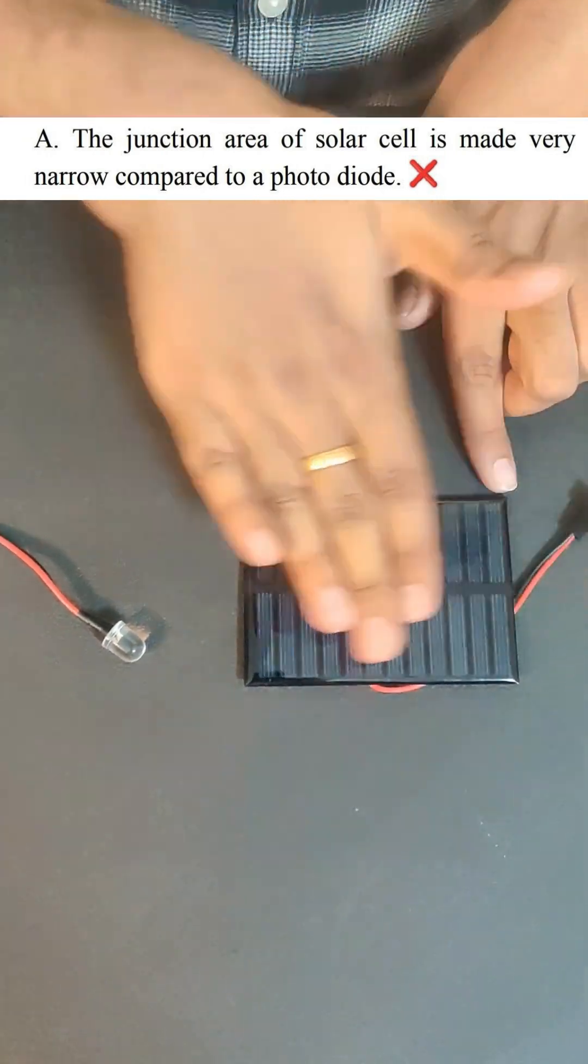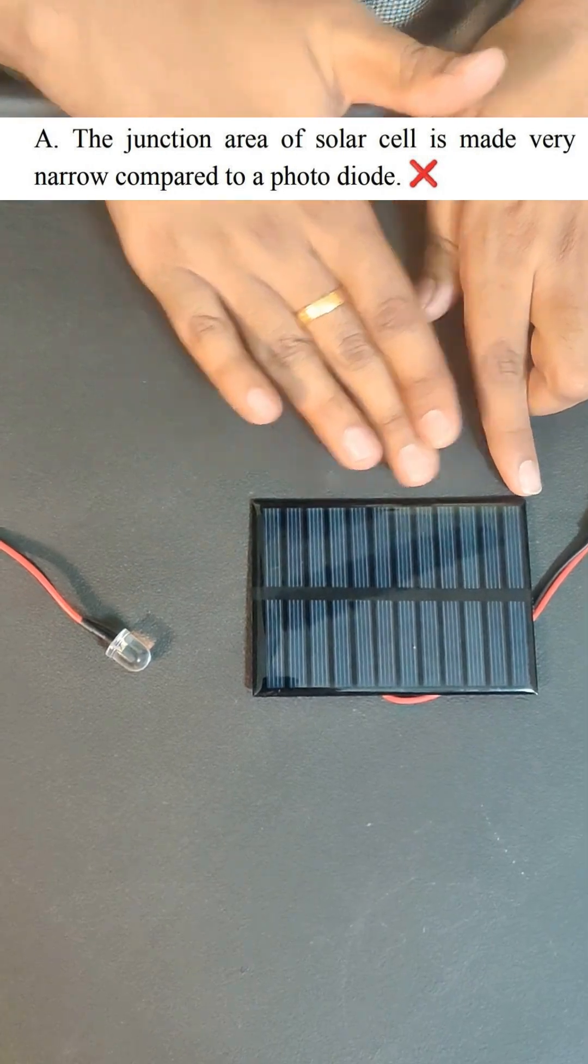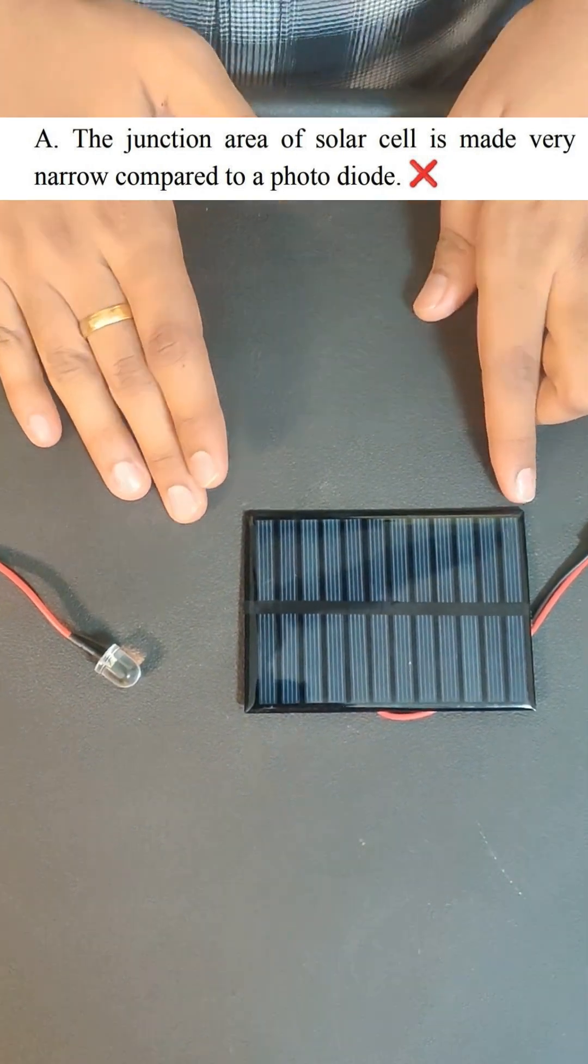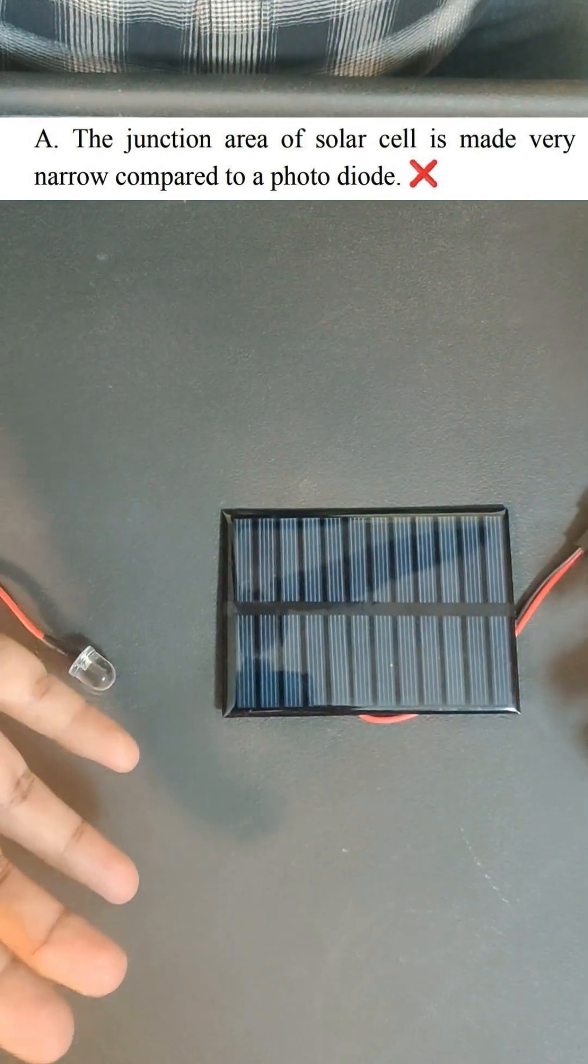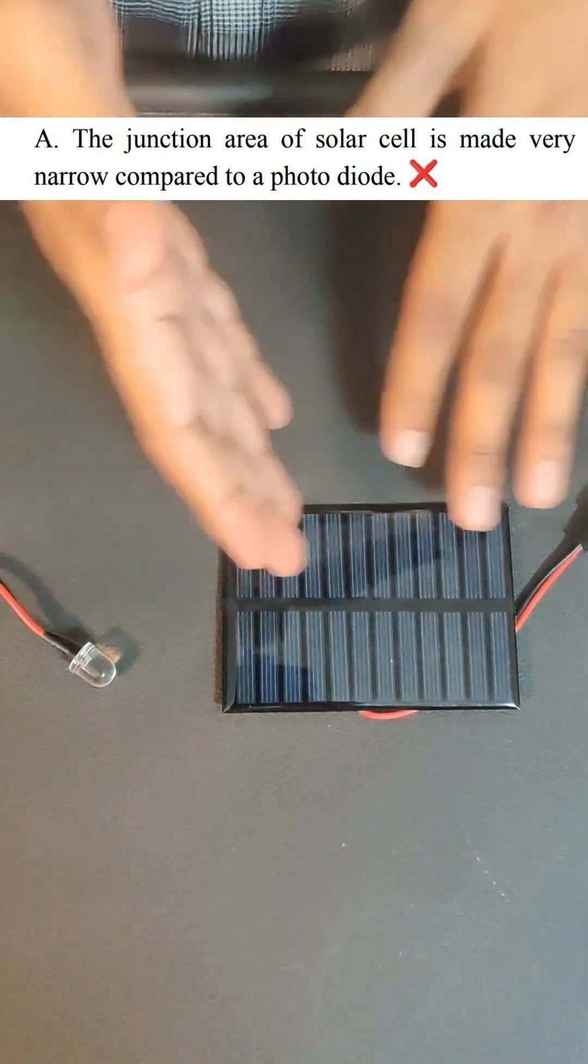Now on solar cell, this is the N side. Then you have the junction and then you have the P side. The junction area is made very large because this needs to capture a lot of photons and that is converted to energy.